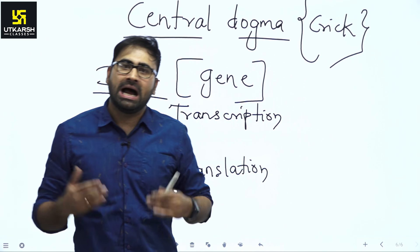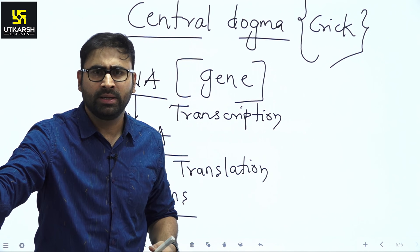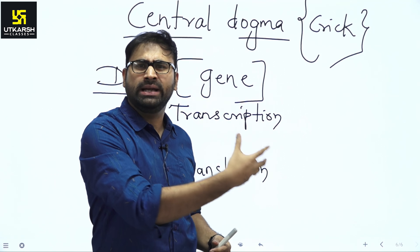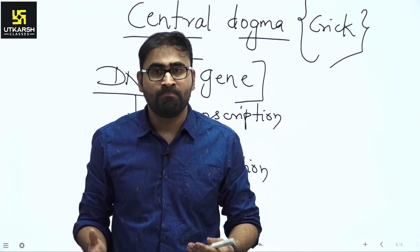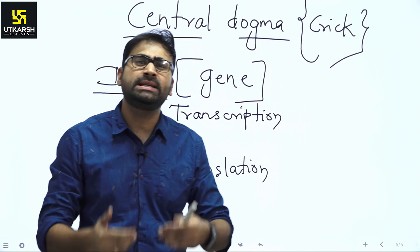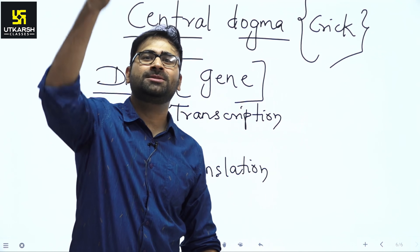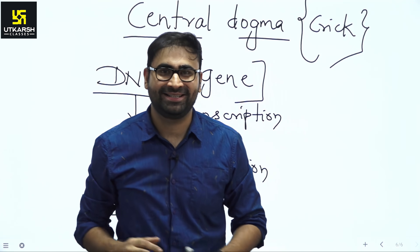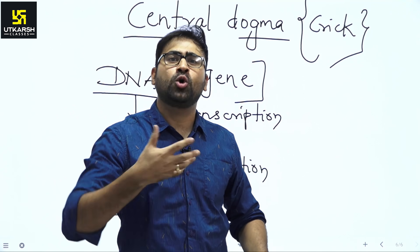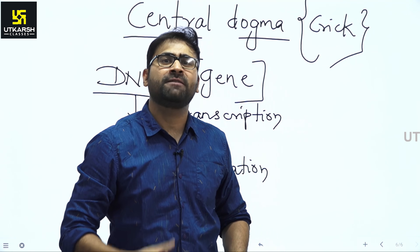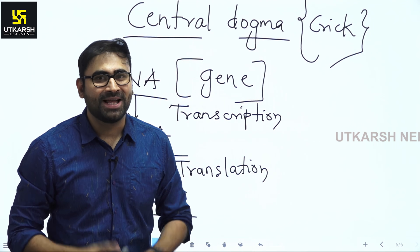Take an example, height is a character controlled by a gene. So, how does a gene control height? Now, this gene forms a protein. This protein stimulates cell division and via cell division the organism increases in height. So, a gene controls the height by coding for a protein, by forming a protein that stimulates cell division.